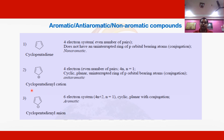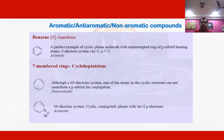Taking the example of cyclopentadienyl anion, there are also two pi bonds giving four pi electrons from the pi bonds. A negative charge is also present on the ring, contributing two more electrons, making the total number of electrons equal to six. This follows the 4n+2 pi electron rule — Hückel's rule. Since there is continuous conjugation possible and six pi electrons, this compound is aromatic.